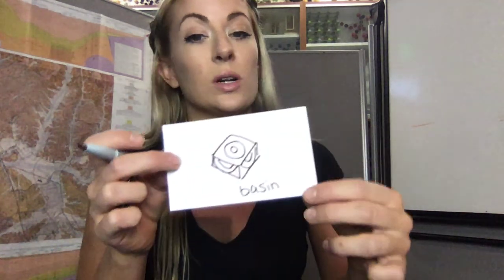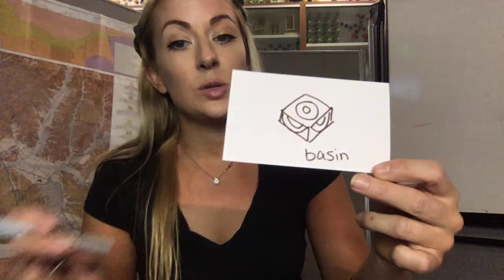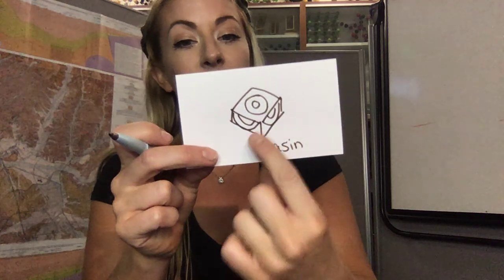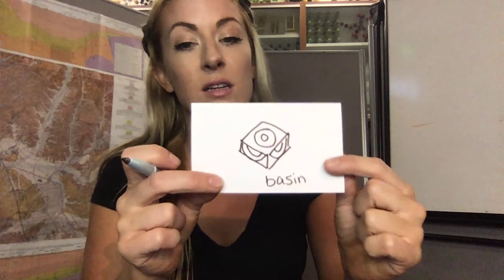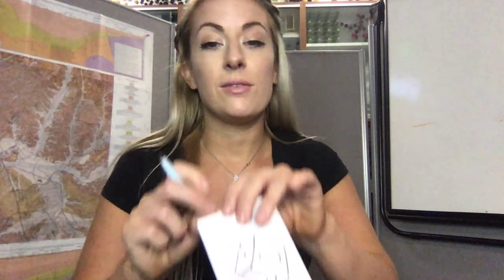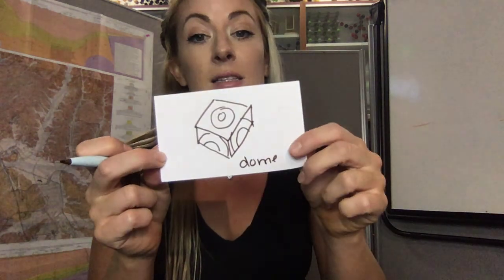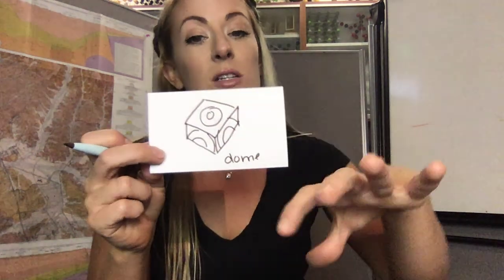That's easy to remember if you know that the word basin is sometimes synonymous with the word sink. So a basin is when you have synclines in multiple directions, whilst a dome is when you have anticlines in multiple directions.